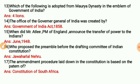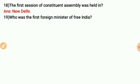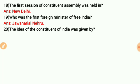The first session of the Constituent Assembly was held in New Delhi. Who was the first Foreign Minister of free India? It was Jawaharlal Nehru.